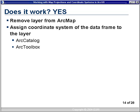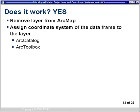If it does work, we need to add that coordinate system information to our data set. First, remove the layer from ArcMap because ArcMap has a lock on it — if it's in ArcMap, I cannot update the coordinate system information. Then you can assign the coordinate system of the data frame to the layer in ArcCatalog or ArcToolbox. In ArcToolbox version 8 there's a wizard called the Define Projection Wizard — all it does is update the metadata of the layer; it adds coordinate system information as metadata. It does not change the coordinate values of the data. There's another tool called the Project Wizard — that's where you would actually change the coordinate values of the data itself to a new coordinate system.